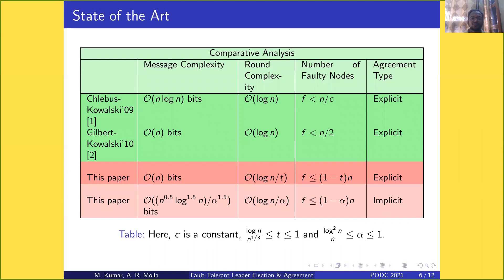In state-of-the-art, we look at comparative analysis of agreement type. Chlebus-Kowalski in 2009 gave message complexity O(n log n) bits, round complexity O(log n), with faulty nodes less than n/c for some constant c. It was explicit agreement.